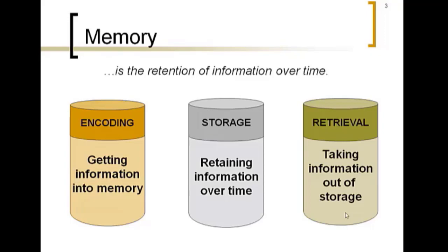Sometimes we get information in and store it, but we have a difficult time retrieving it — like it's on the tip of your tongue. Maybe that's what it feels like on a test: you know you got the information in, you stored it, but you're having a hard time retrieving it. One thing to do during a test is deep breathing or progressive muscle relaxation — whatever helps calm you down to improve retrieval. Also, practicing retrieving the information through self-testing before the actual test is a really great study tip. Three basic steps: encoding, storage, and retrieval.